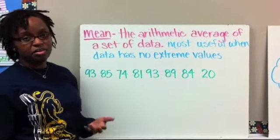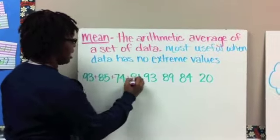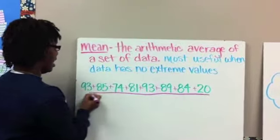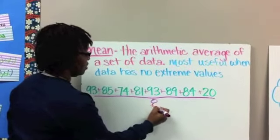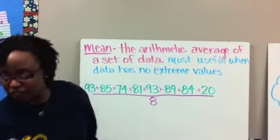So if you all remember this, the way we find mean is we add all the values in our data set. Okay, and then we divide by how many there are. So if you count those up, there are eight different data values here.